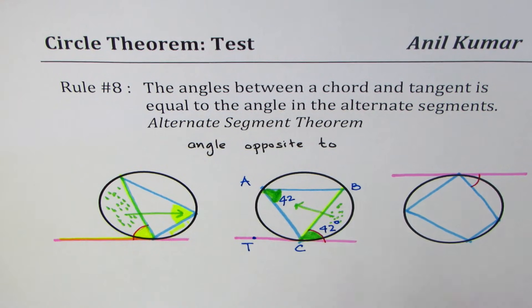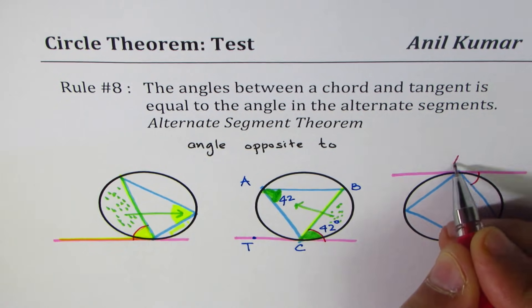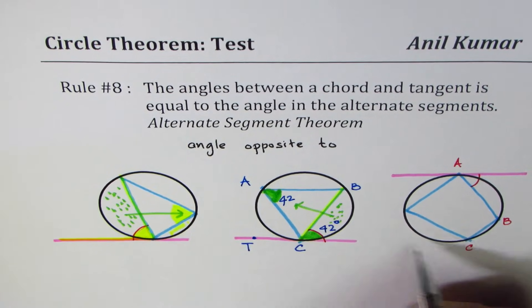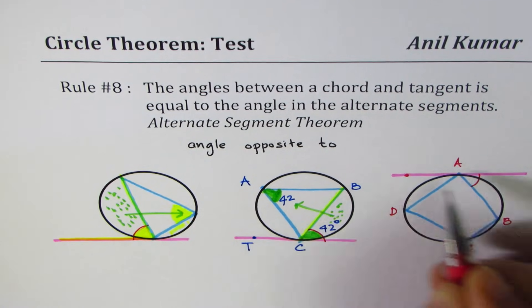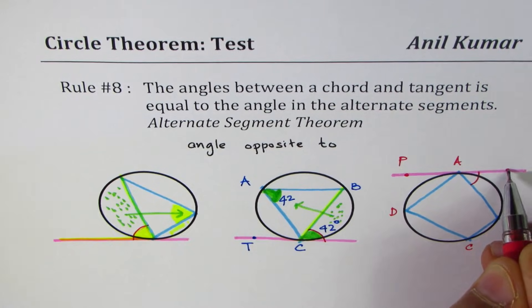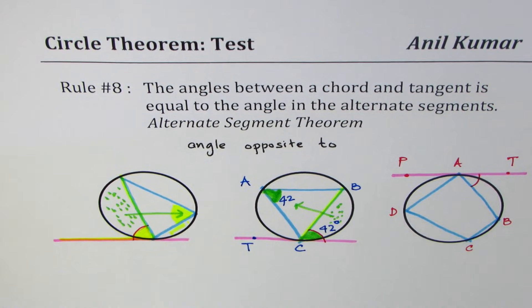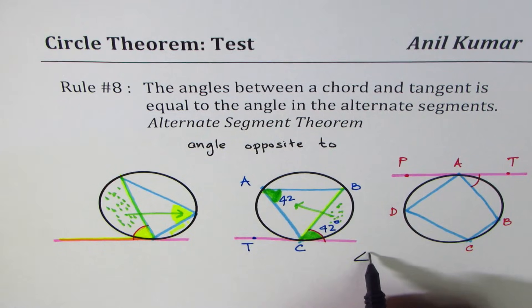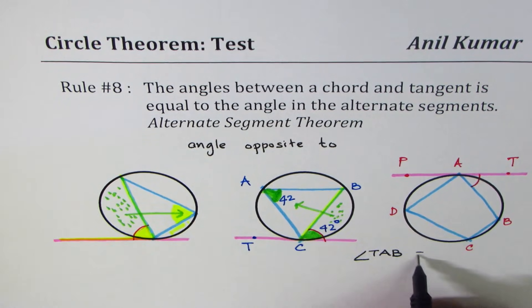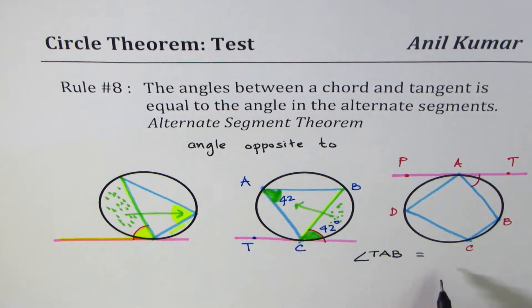Let's say the points of the quadrilateral are A, B, C, D. Let's call this as P and this as T. In that case, name the angle equal to angle TAB. Which angle is equal to TAB?